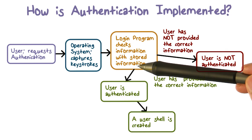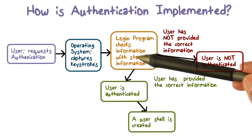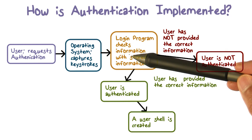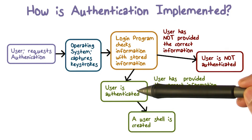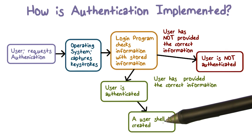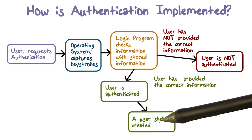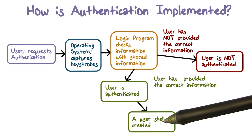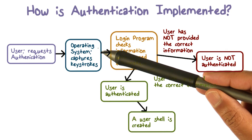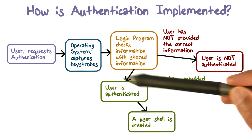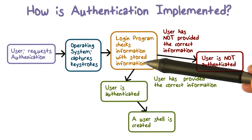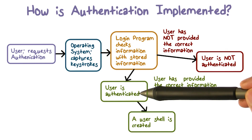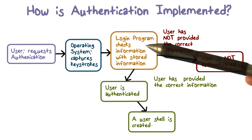If there's a match between what the system knows and what you provide, that is a true positive. If it's the right user, the outcome is positive — the user is authenticated. When the user is authenticated, a user shell is created, and you can now initiate any further actions. This is the case where the right user provides the right evidence and the login program successfully logs in the user.